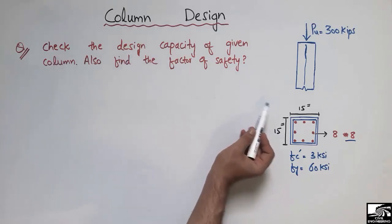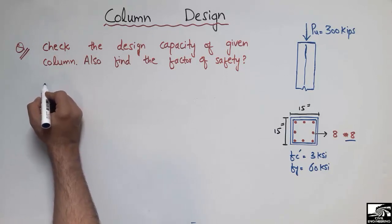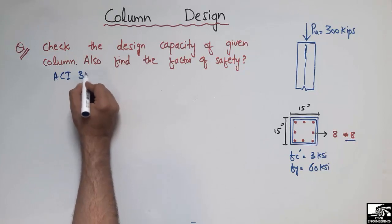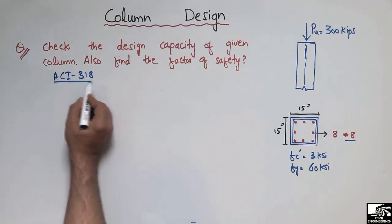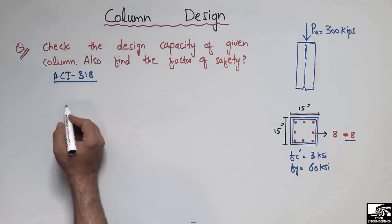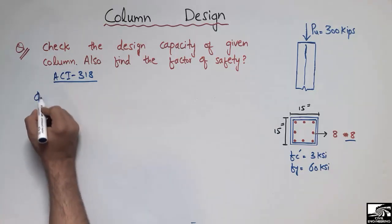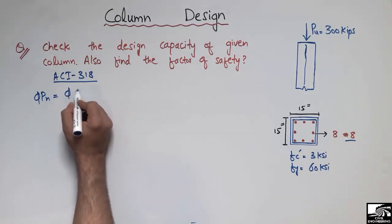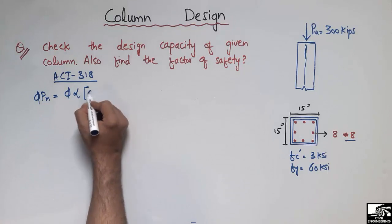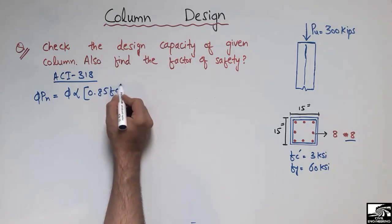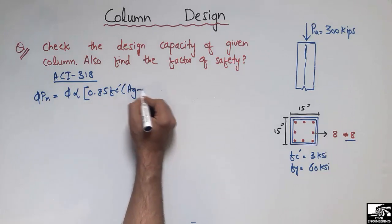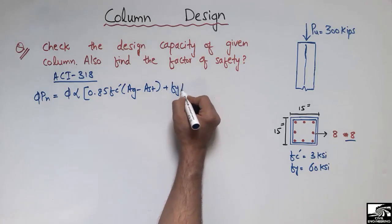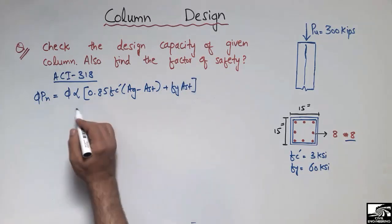Our first step is to check the design capacity of this column. The formula for design capacity of an RCC column according to ACI 318 (American Concrete Institute) is: φPn = φ · α · [0.85 · f'c · (Ag − Ast) + fy · Ast].